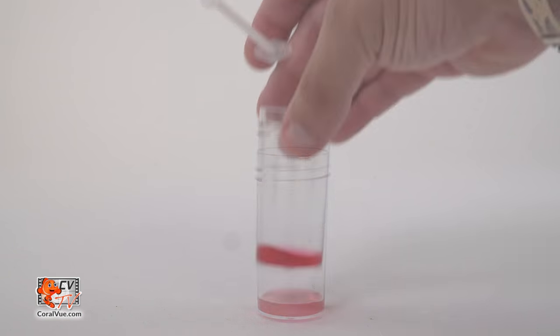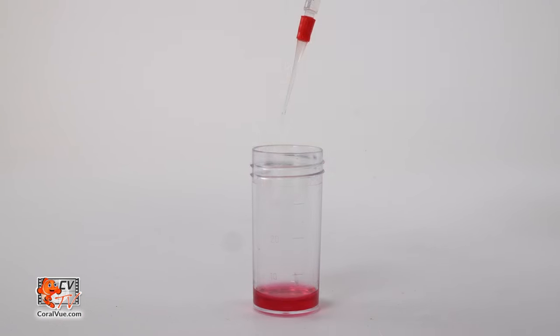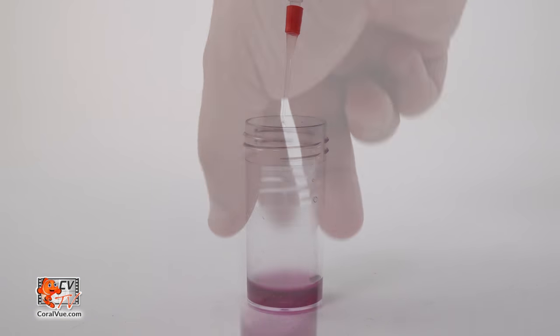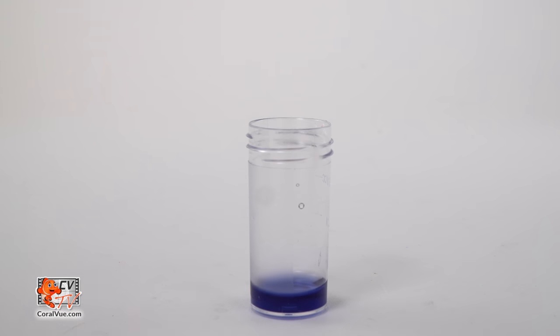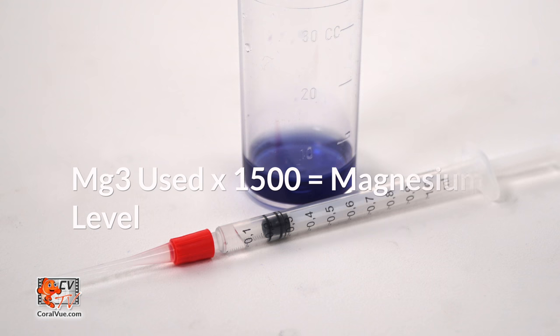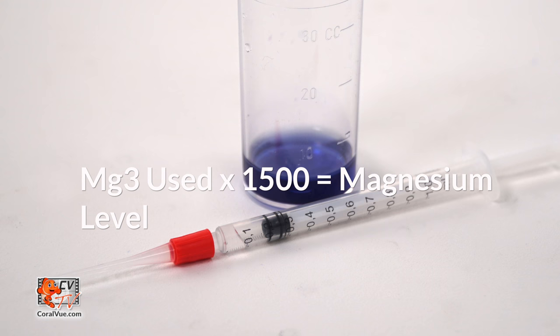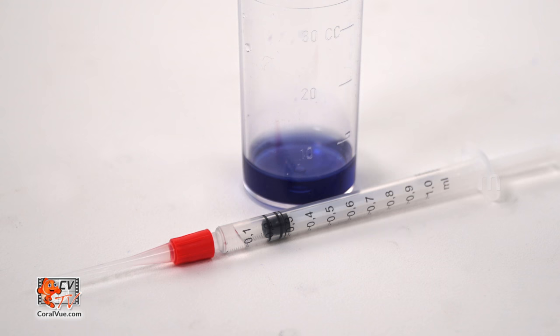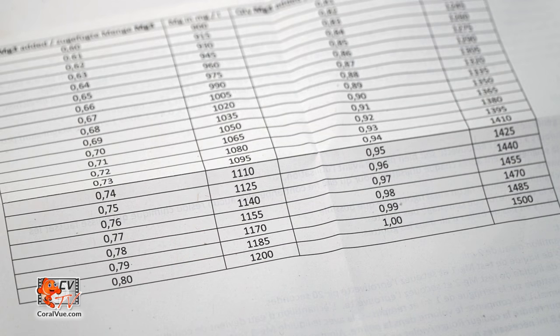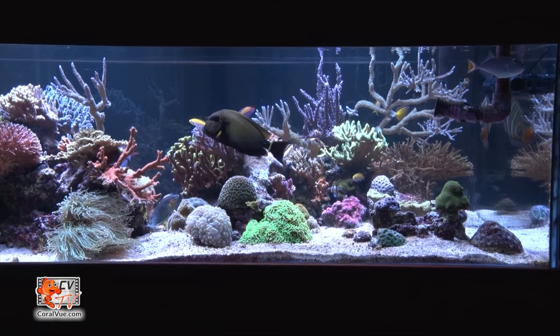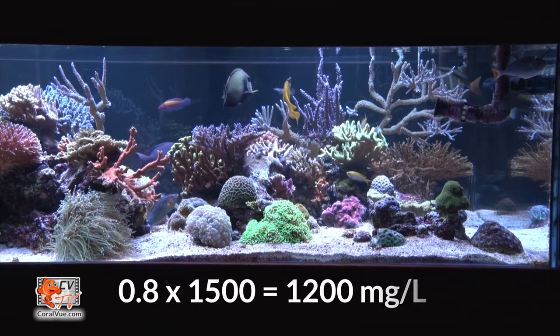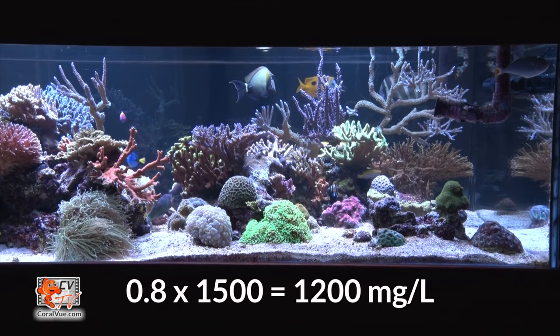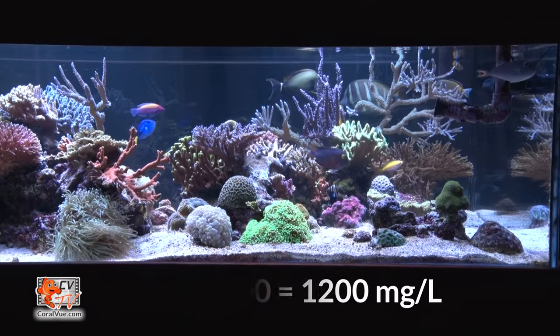Slowly add the syringe reagent one drop at a time and swirl the sample after each drop. Continue adding until the sample changes from a red purple to blue. Multiply the amount of MG3 used by 1500 to obtain the tank's magnesium levels, or you can simply use the chart included in the box. In our example, we used 0.8 milliliters of MG3 reagent, so final magnesium reading is 1200 milligrams per liter.